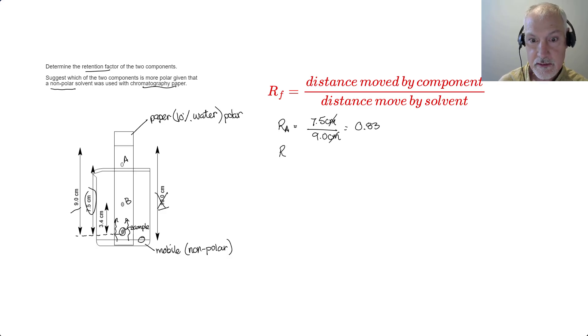In a similar fashion, the retention factor for B, well, it moved 3.4 centimeters. The solvent moved 9.0 centimeters. And that gives me a retention factor of 0.37.